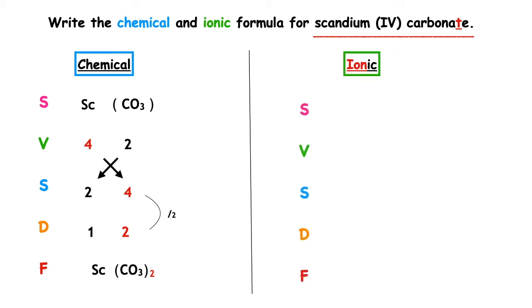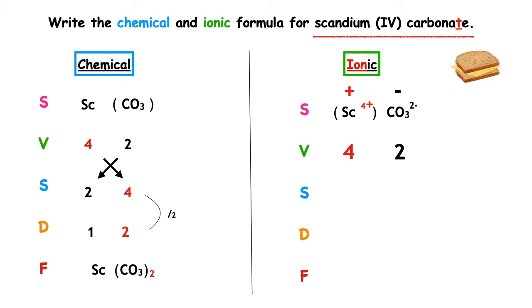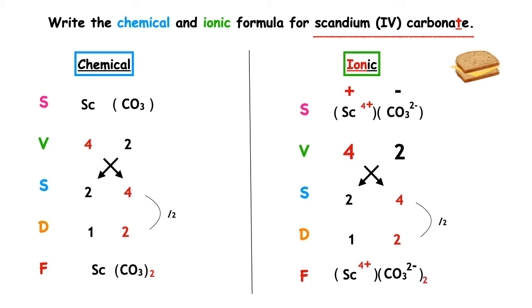The same steps apply for the ionic formula — remember to make a sandwich and wrap it up. Symbol for scandium Sc, valency four. Carbonate CO3, valency two. Scandium will form a positive ion and carbonate a negative ion. Four times positive equals four positive — keep it in a bracket. Two times negative gives two negative — keep it in a bracket. Swap the valencies over; highest number is two. So the ionic formula is (Sc⁴⁺)(CO3²⁻)₂. As there is only one scandium ion, we can remove the brackets around that one.